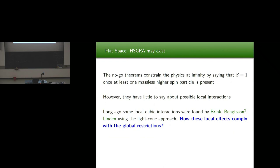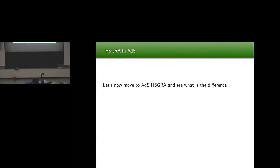All these no-go theorems constrain the S-matrix — observables at infinity — and they have little to say about local things. An interesting result obtained many years ago by Brink, Bengtsson squared, and Linden using the light cone approach found some consistent cubic interactions. This seemed in tension with the no-go results, because why would nature give you the opportunity to couple particles in the first approximation while at the same time saying the S-matrix must be trivial? I will explain how this can be consistent.